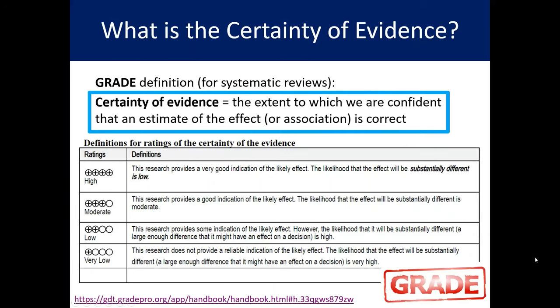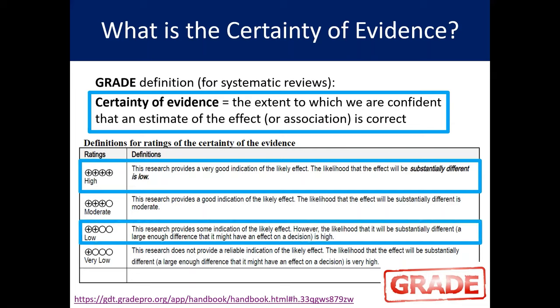GRADE is an assessment of the certainty of evidence — the extent to which we are confident that an estimate of the effect or association is correct. After assessing the evidence, you will give it a GRADE of either HIGH, MODERATE, LOW, or VERY LOW. A GRADE of HIGH means the research provides a very good indication of the likely effect; the likelihood that the effect will be substantially different is LOW. A GRADE of LOW means the research provides some indication, but the likelihood that the effect will be substantially different is HIGH.